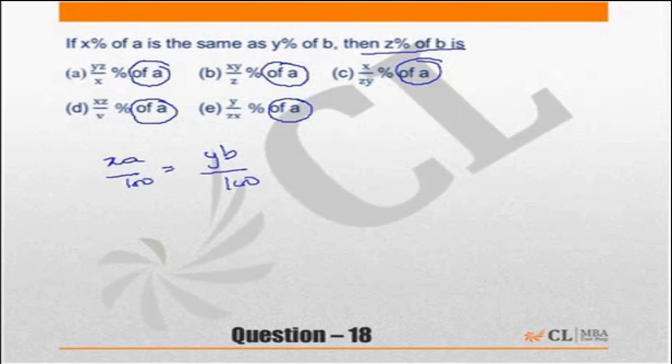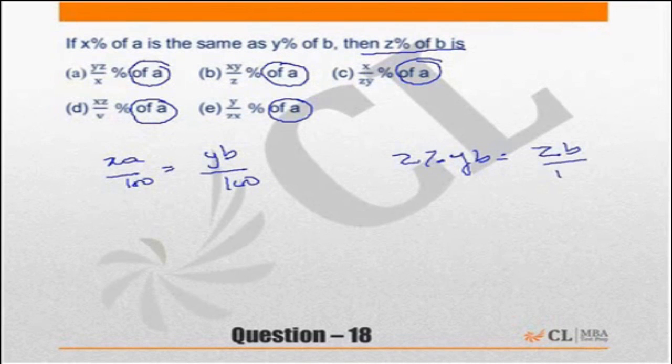So we need to find what is z percent of B. z percent of B will be equal to zB upon 100. So we need to find what is zB upon 100.